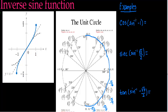First example: inverse sine of negative 1. Inverse sine is asking you, the sine of what angle will give you negative 1? I know I'm looking for the y-coordinate whose angle will give me negative 1. I get negative 1 at 3π/2, so the sine of 3π/2 gives negative 1. But 3π/2 is not within the permitted range of negative π/2 to π/2, so I have to use the equivalent, which is negative π/2.